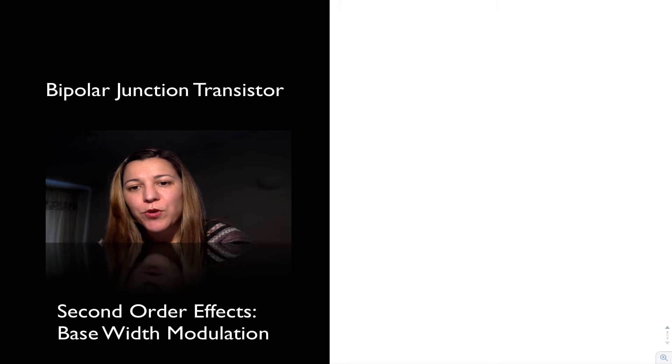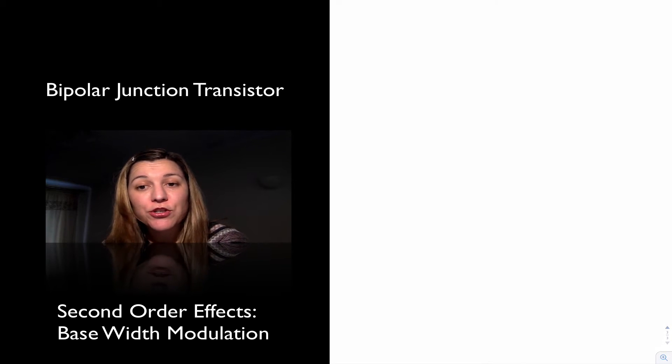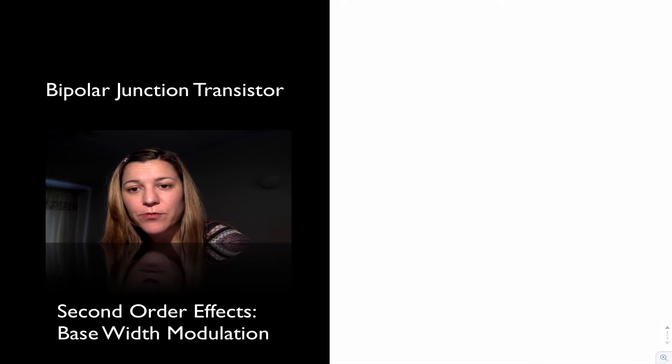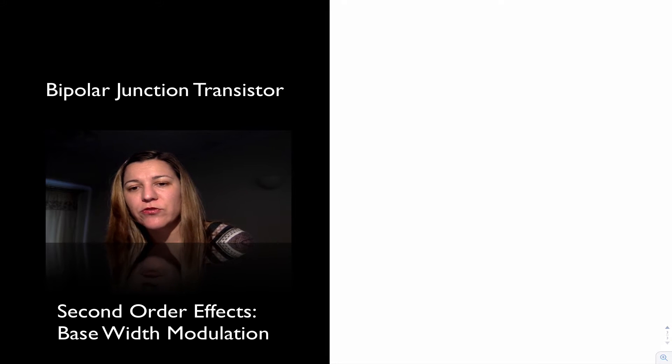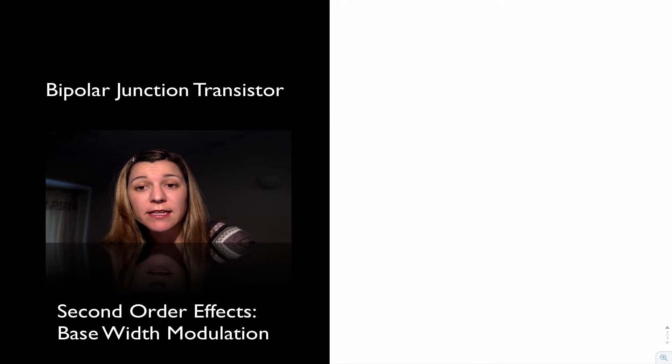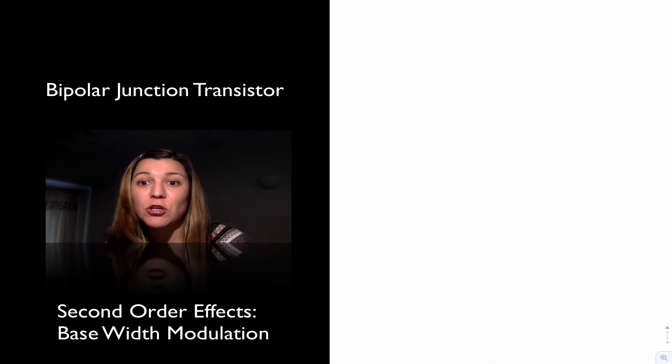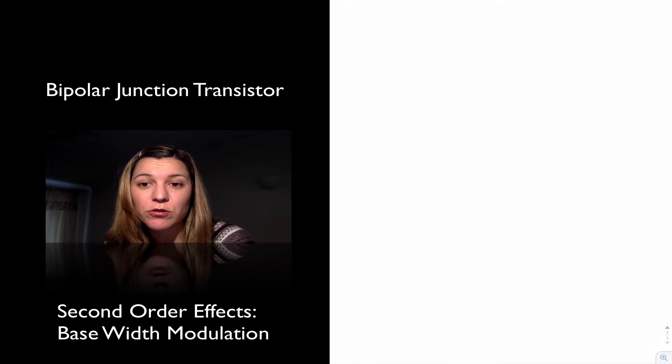Hello. We just talked about the structure and operation of the BJT transistor. We looked at a first-order model, a very simple model of the operation of the transistor. And now we're going to take a look at some of the non-idealities that are not considered in that model. We call them the second-order effects because they will be considered in a second-order model, a more complex model of the transistor.